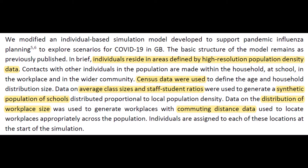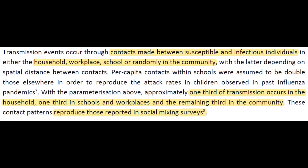This model is really cool. It takes census data, data on classrooms, commutes, workspaces, etc., to simulate how people travel and gather. It's a modified version of a model used in pandemic influenza planning — a great use of existing resources. If you'd like to skip the summary of the model details, go to the timestamp on screen or in the description. Otherwise, let's go over the assumptions they make. They assume that about a third of transmission occurs within the household, a third in schools and work, and a third elsewhere in the community.